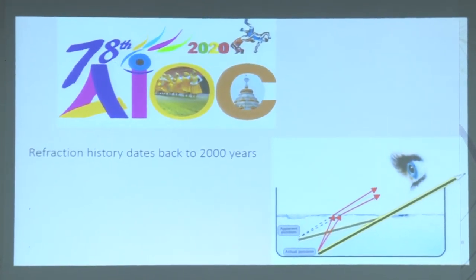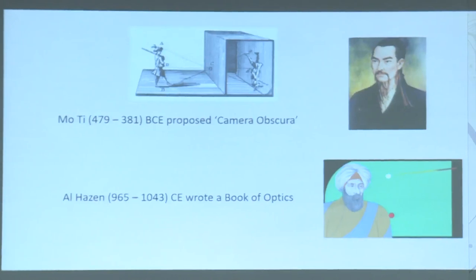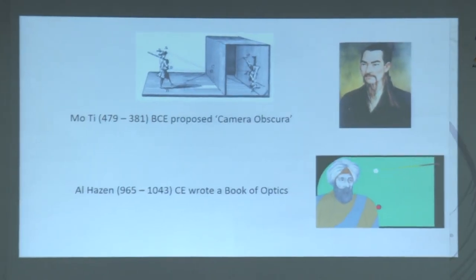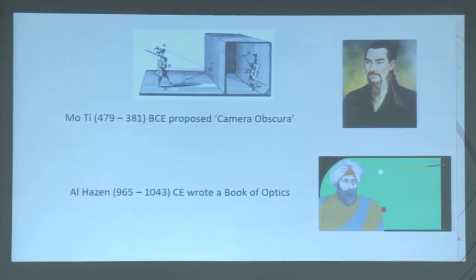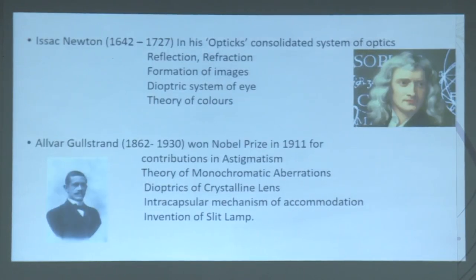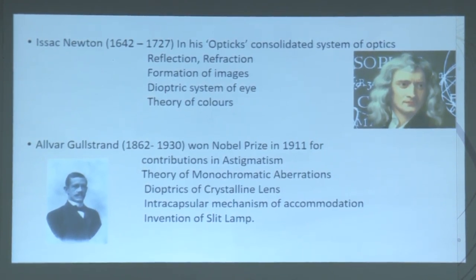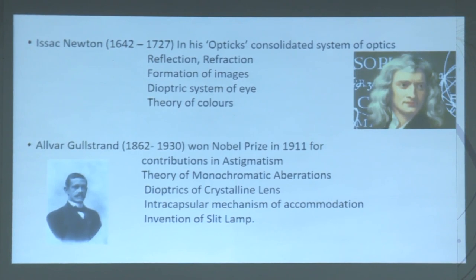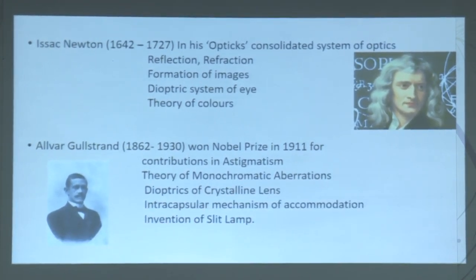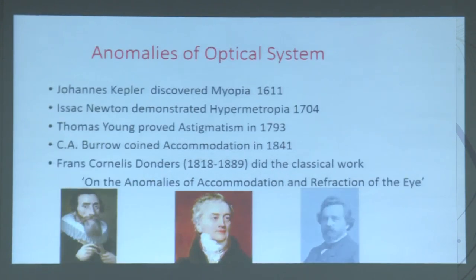That curiosity might have driven him to explore refraction. In historic times, Moti the Chinese philosopher proposed the camera obscura, the pinhole camera. Alhazen, an Arabic scholar, wrote a book on optics. In recent times, Isaac Newton in his book Optics consolidated a system of optics — reflection, refraction, formation of images, dioptric system of the eye, and theory of colors. Later, Alvar Gullstrand won the Nobel Prize in 1911 for his contributions in astigmatism theory, monochromatic aberrations, dioptrics of the crystalline lens, intracapsular mechanism of accommodation, and invention of the slit lamp.